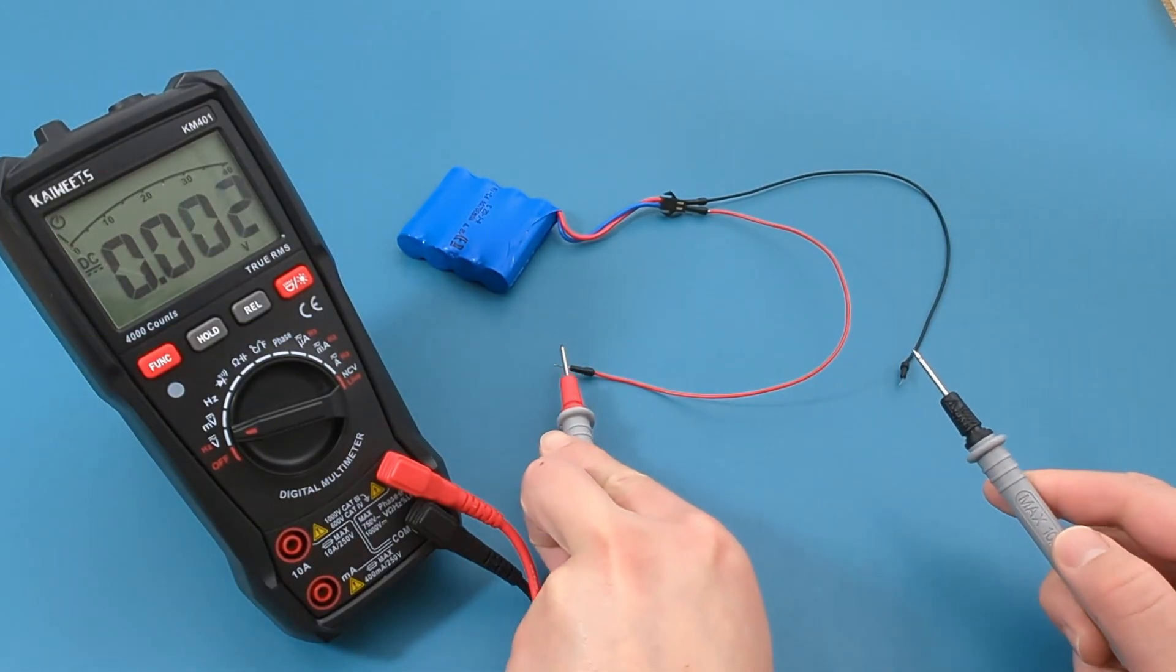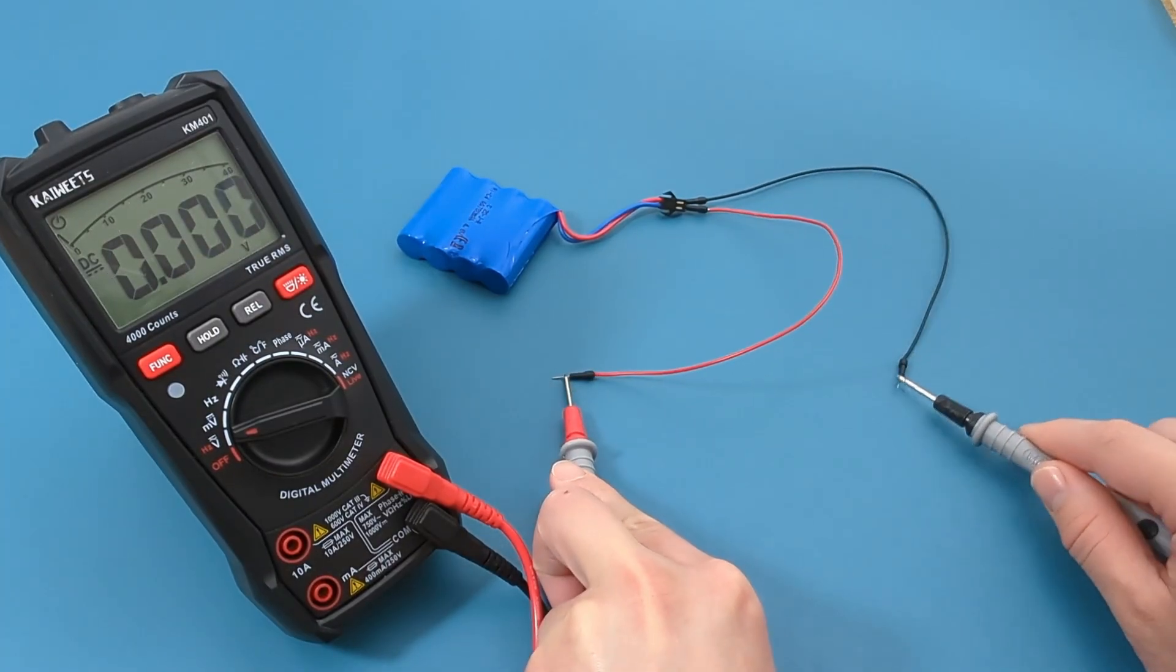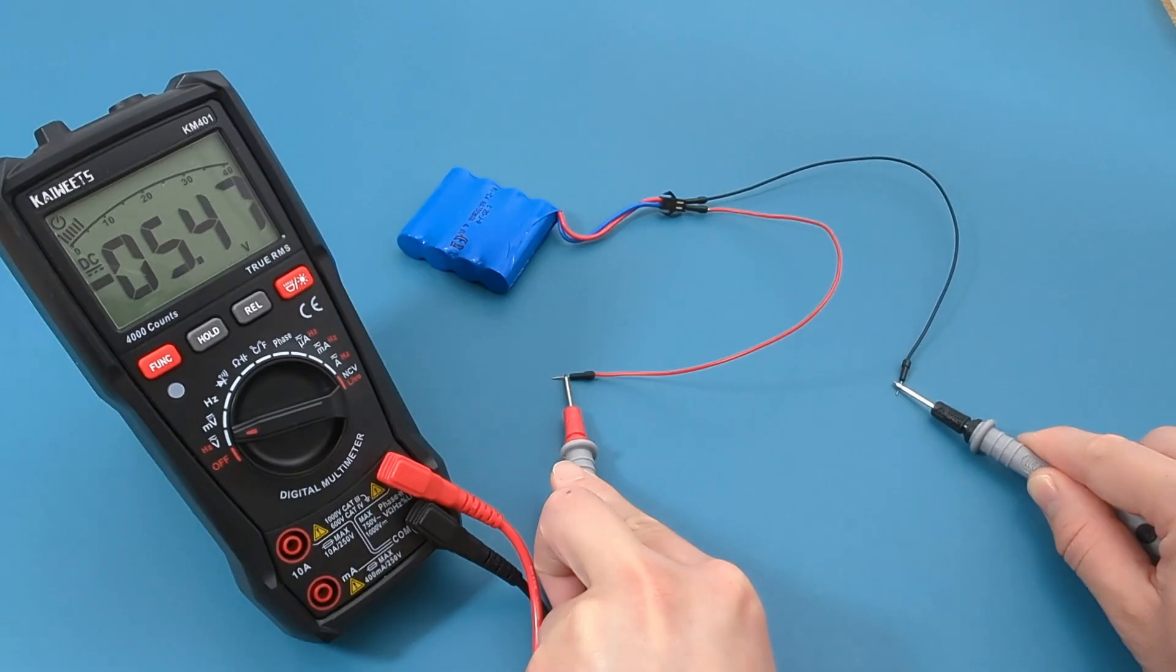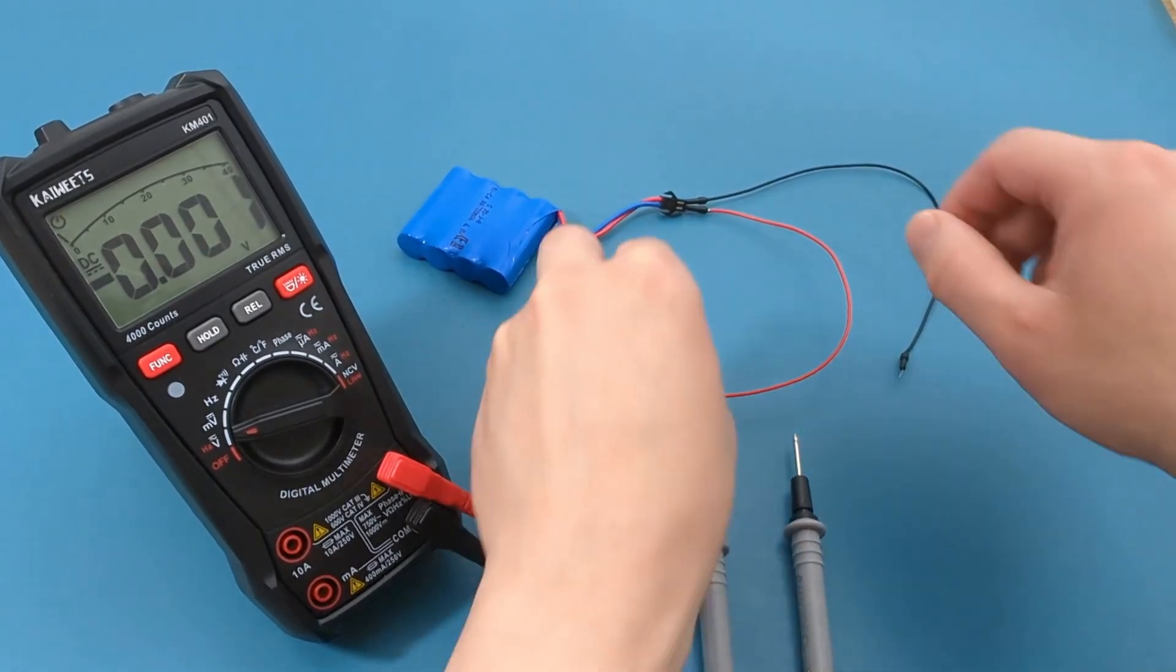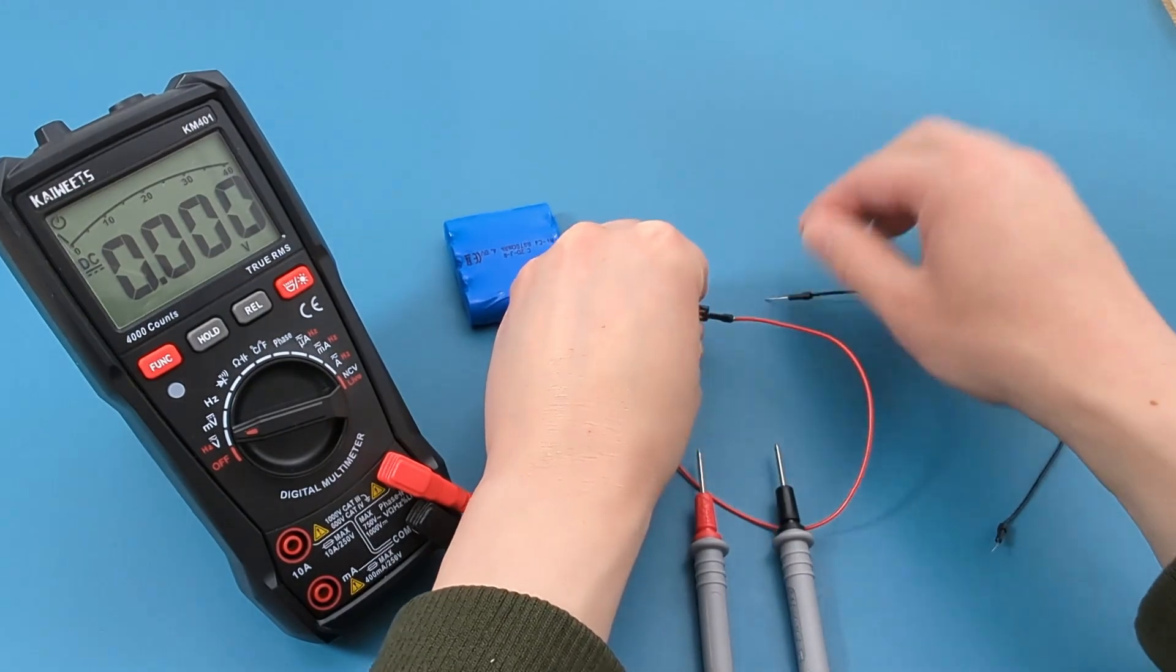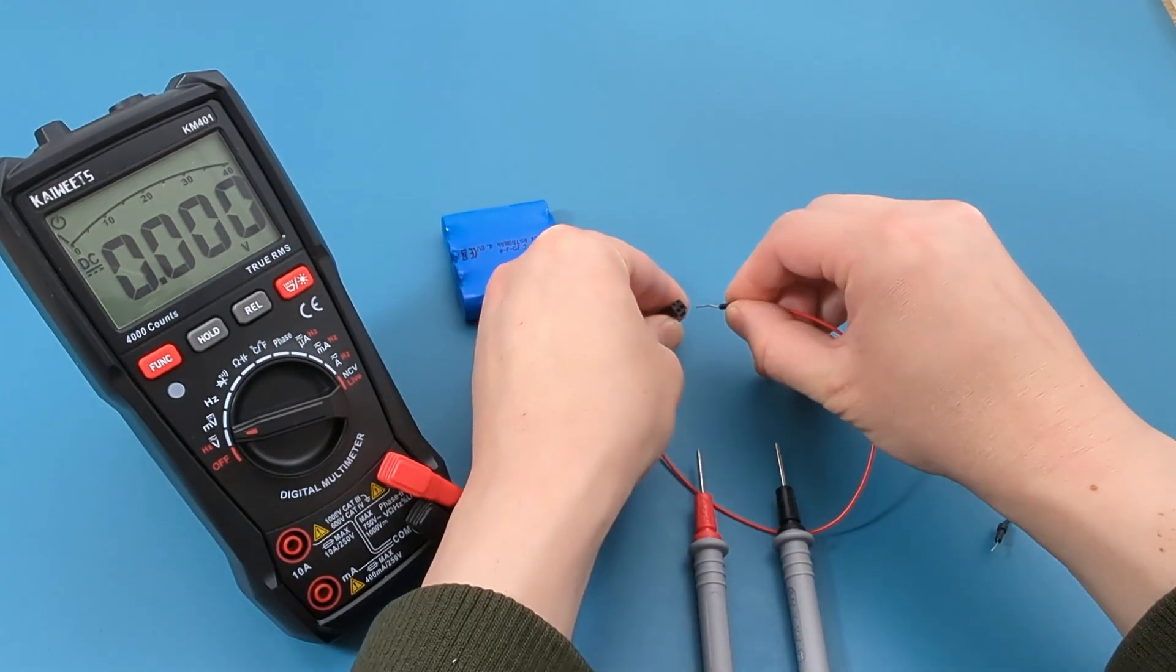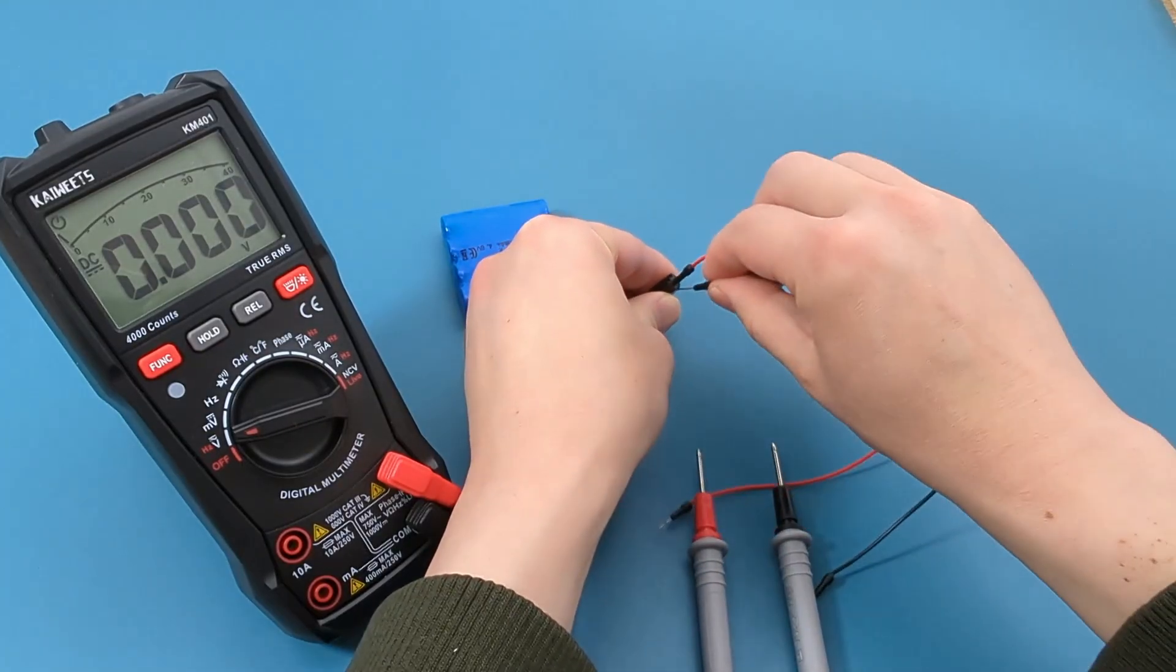Touch the red probe lead to the red jumper wire and the black probe lead to the black jumper wire. The reading shows a negative value, so we have the wires reversed. Switch the other end of the jumper wires. For future reference, ensure that the red cable from the battery pack aligns with the hole on the corresponding side of the connector.